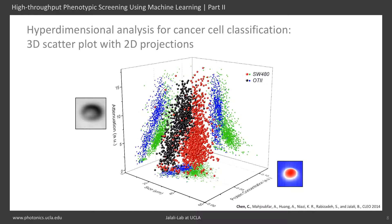This is a 3D scatter plot attributed to size, protein concentration, and attenuation. The 2D projections on the three orthogonal planes are shown in blue and green. It is clear that additional dimensions improve the distinguishment among different cell types compared to individual features.